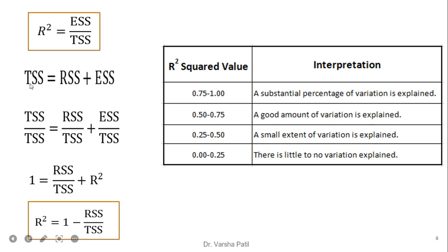From the diagram, it is very clear that TSS is equal to RSS plus ESS. If we divide by TSS, we will get 1 equals RSS/TSS plus ESS/TSS, and this is nothing but R-square. So we can represent R-square either as ESS/TSS, or R-square equals 1 minus RSS/TSS. The value of R-square varies between 0 to 1, or equivalently 1 to 100%.